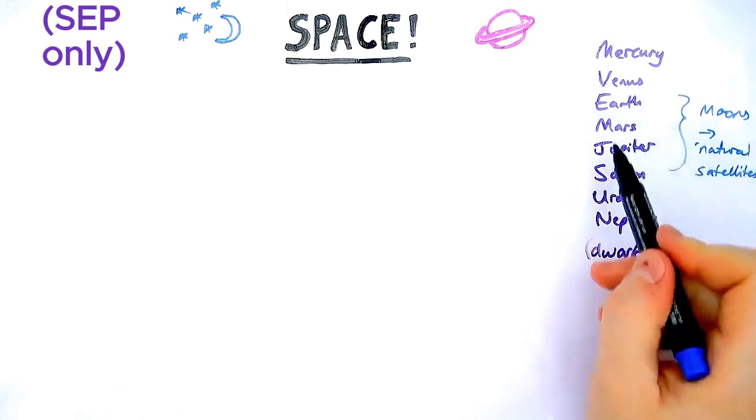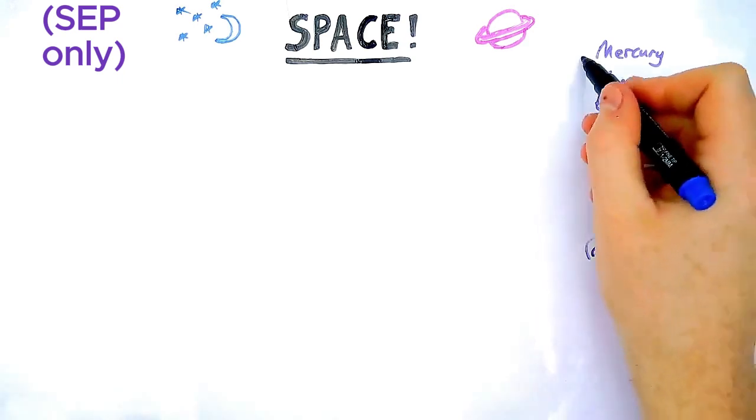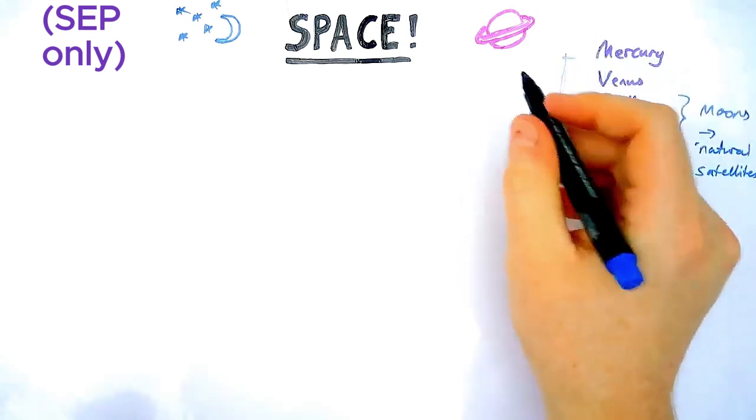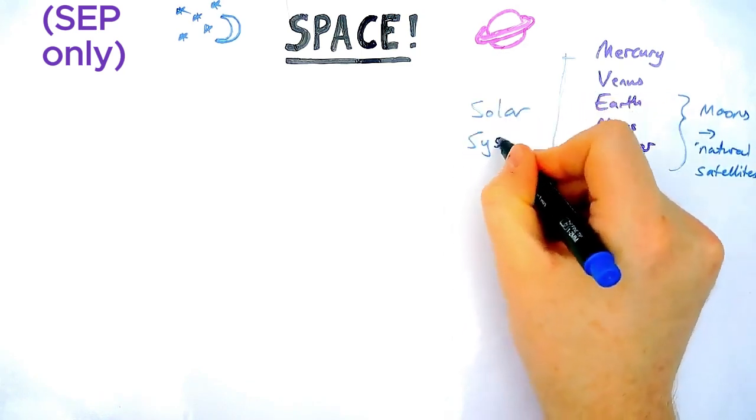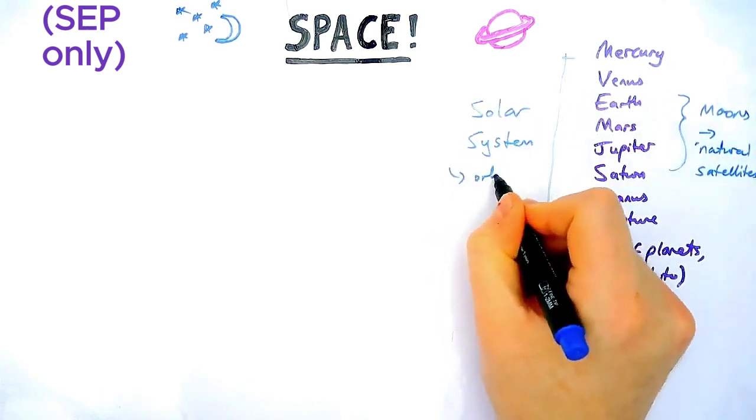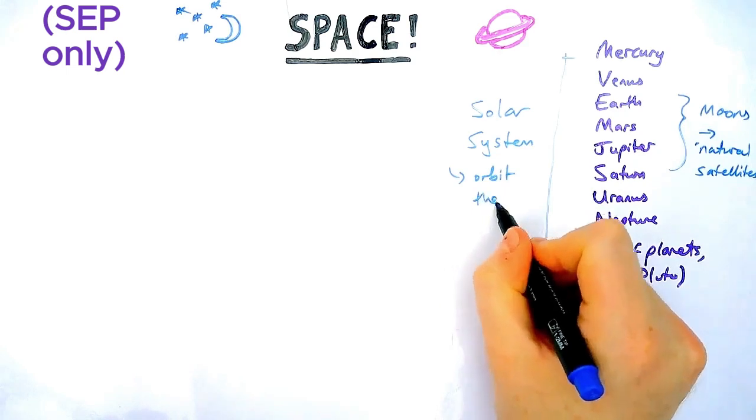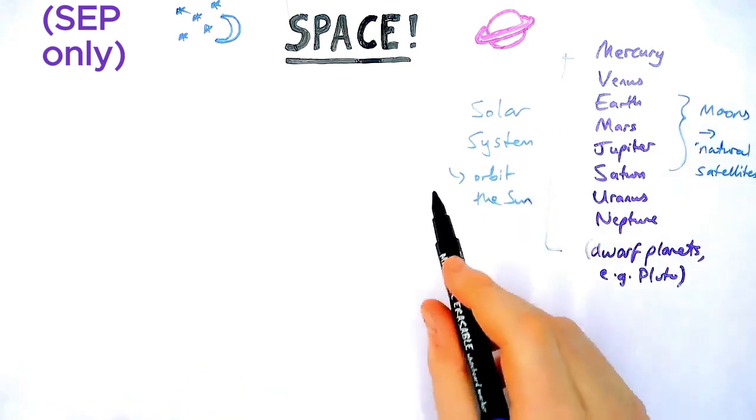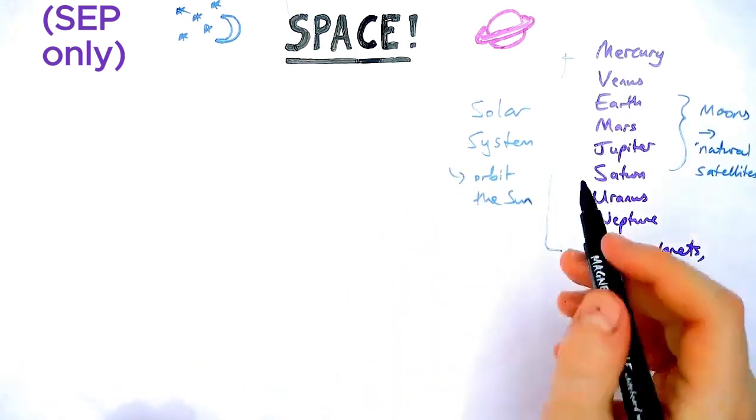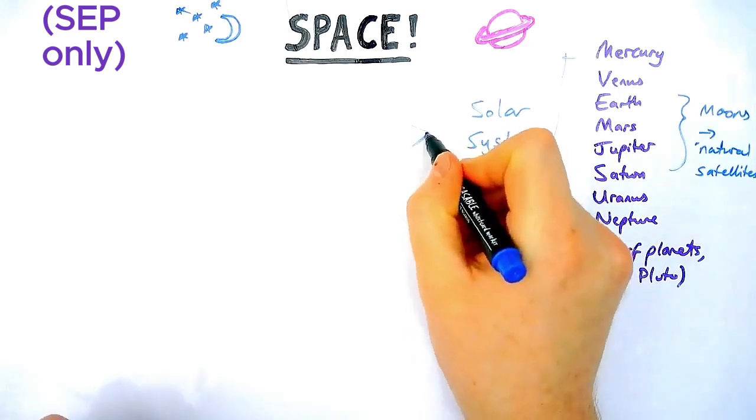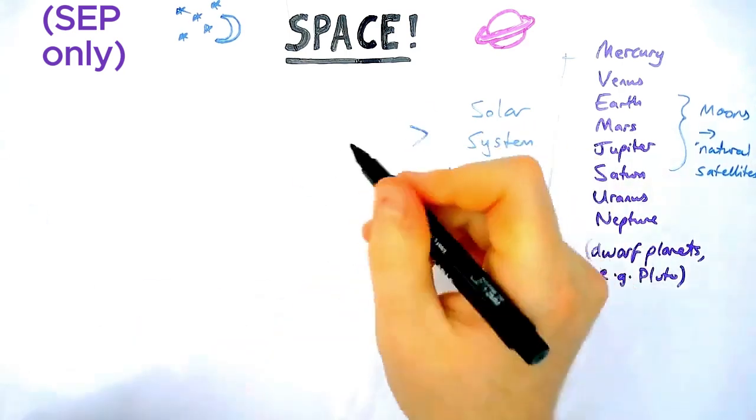Jupiter and Saturn have absolutely loads between them. We keep finding more. It's probably going to reach 100 soon. Now bigger than planets, let's look at the scale of space. So all these planets and moons and asteroids and comets make up the solar system, which is made up of things that generally speaking orbit the Sun. Obviously moons orbit planets, but the whole system orbits the Sun.